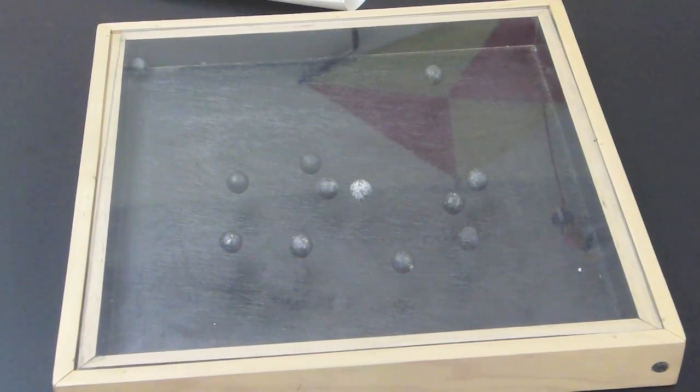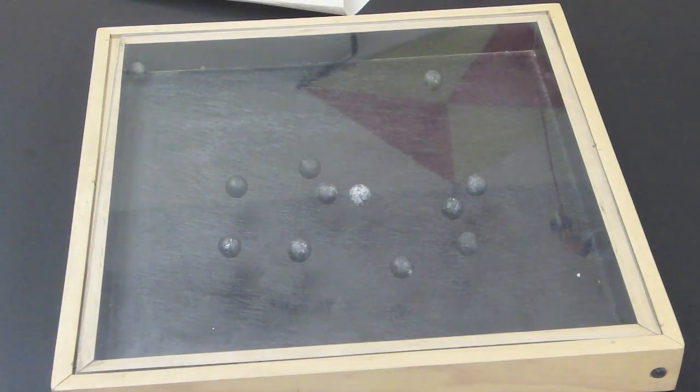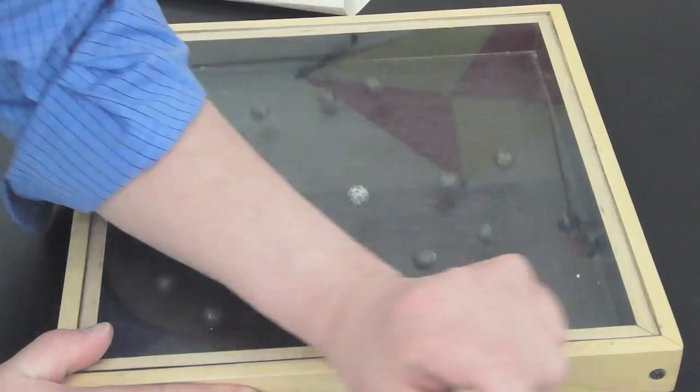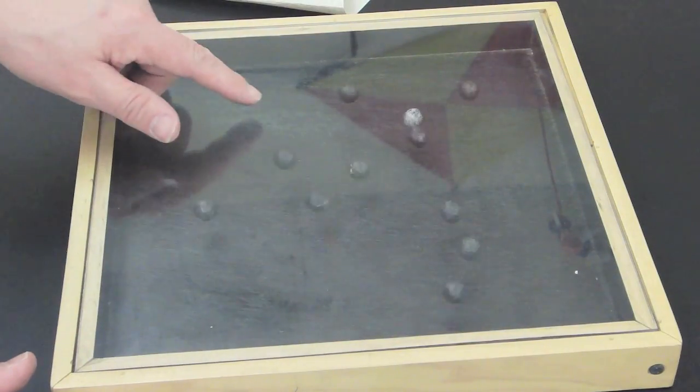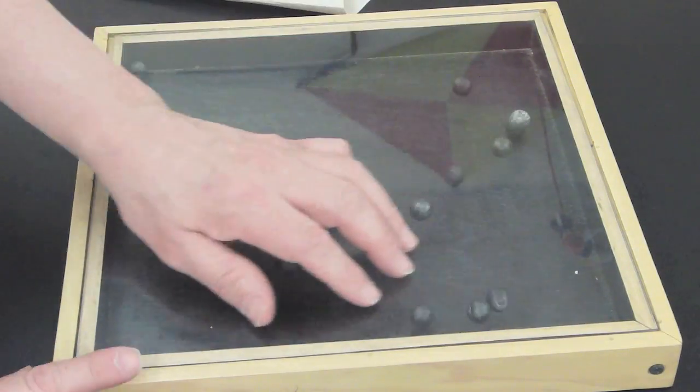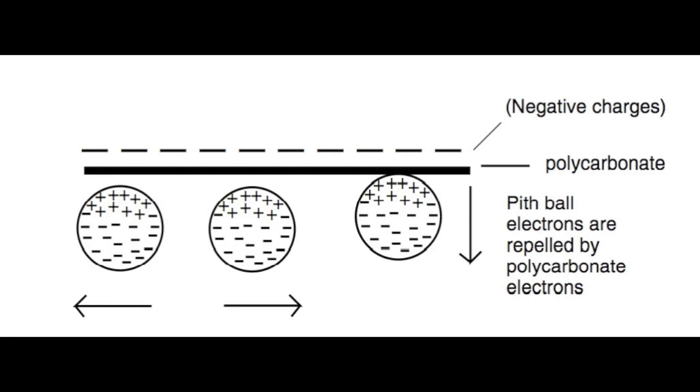Initially, the charges on the plastic and the balls are neutral. But as I rub that surface with my arm, I create a negative charge on the plastic, and the balls are simply going to readjust their positions with the negative charges moving away from the plastic and the positive side of the ball being attracted to the plastic.